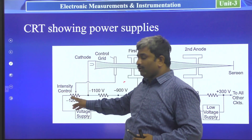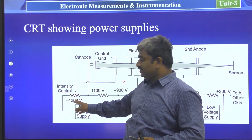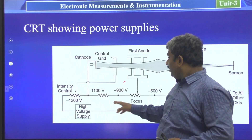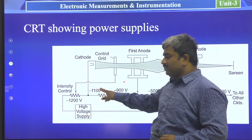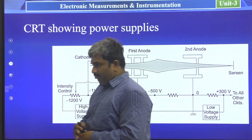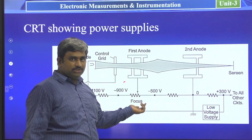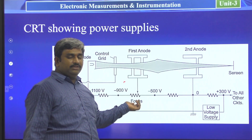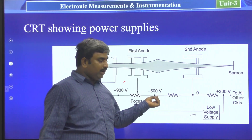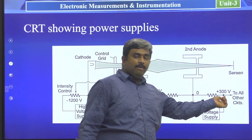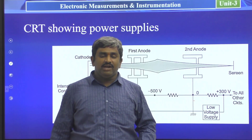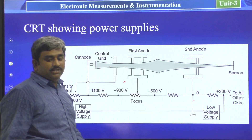The intensity control uses the R5 resistor (also called the Orphi resistor) at the control grid position. Voltage levels are: −1100V, −900V; before −900V there is resistor R3, which controls focus at the first anode. Then we have −500V, 0V, and +300V — the +300V is generally supplied to other circuits on the CRO.